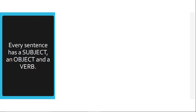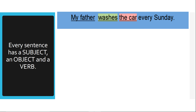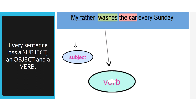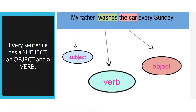What is important for us to know is the structure of every sentence. Every sentence has a subject, an object, and a verb. We have to know how to find the subject, the object, and the verb. This is a typical, normal word order in a sentence: 'My father washes the car every Sunday.' My father is the subject, normally at the beginning of the sentence. Then after the subject comes the verb, and after the verb comes the object. And at the end we can have adverbials of time and place. So: subject, verb, and object.